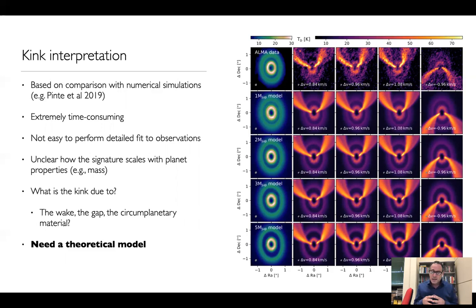At the more fundamental level, we still are not sure about what is the kink due to. Is it due to the wake? Is it due to the gap? Or is it maybe due to the circumplanetary material? Now, the reason why we still are struggling with this is because we yet do not have a theoretical model for the development of such kinks. And this is the aim of the current work, to provide such a model.